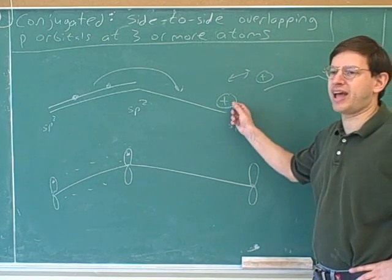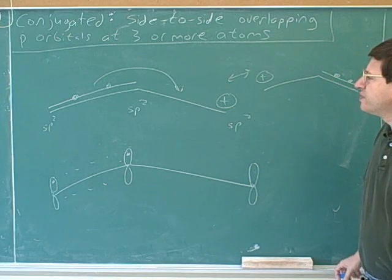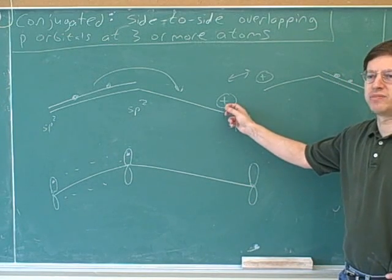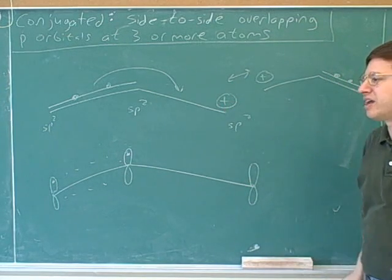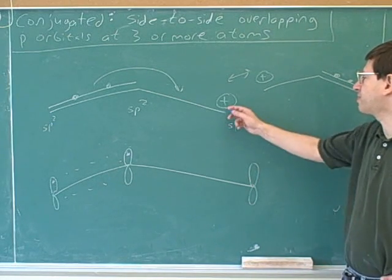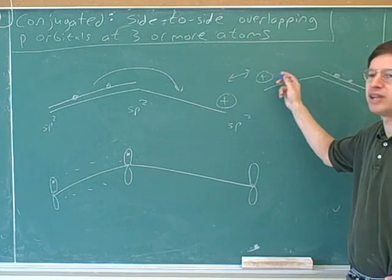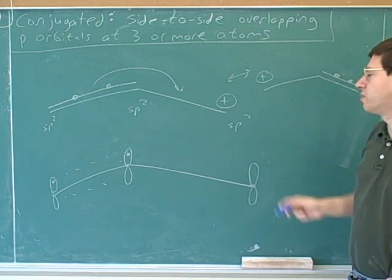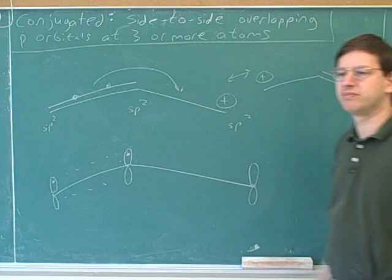Normally, carbocations are not very happy. In fact, you might remember that normally we can't even form primary carbocations. This is a primary carbocation. Normally, we couldn't even form a primary carbocation. But it's okay to form this primary carbocation because it's stabilized by resonance. Or another way that we can put it is it's stabilized by being part of a conjugated system.